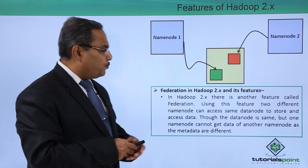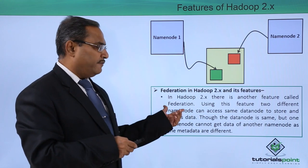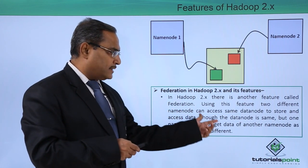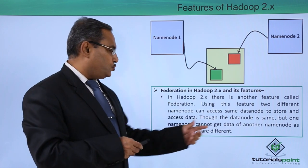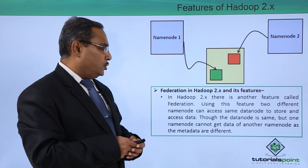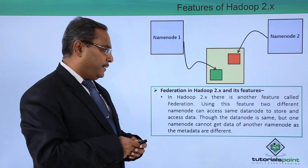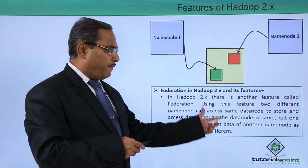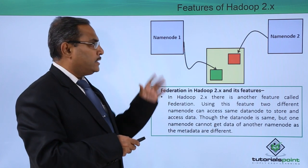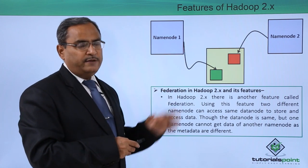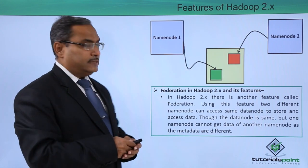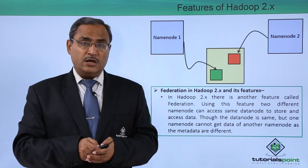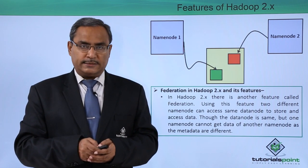In Hadoop 2.x, there is a feature called federation. Using this feature, two different name nodes can access the same data node to store and access data. Though the data node is the same, one name node cannot get data of another name node, as the metadata of these name nodes will be different. This concept is known as federation, and these are the different advantageous features you enjoy in Hadoop 2.x.